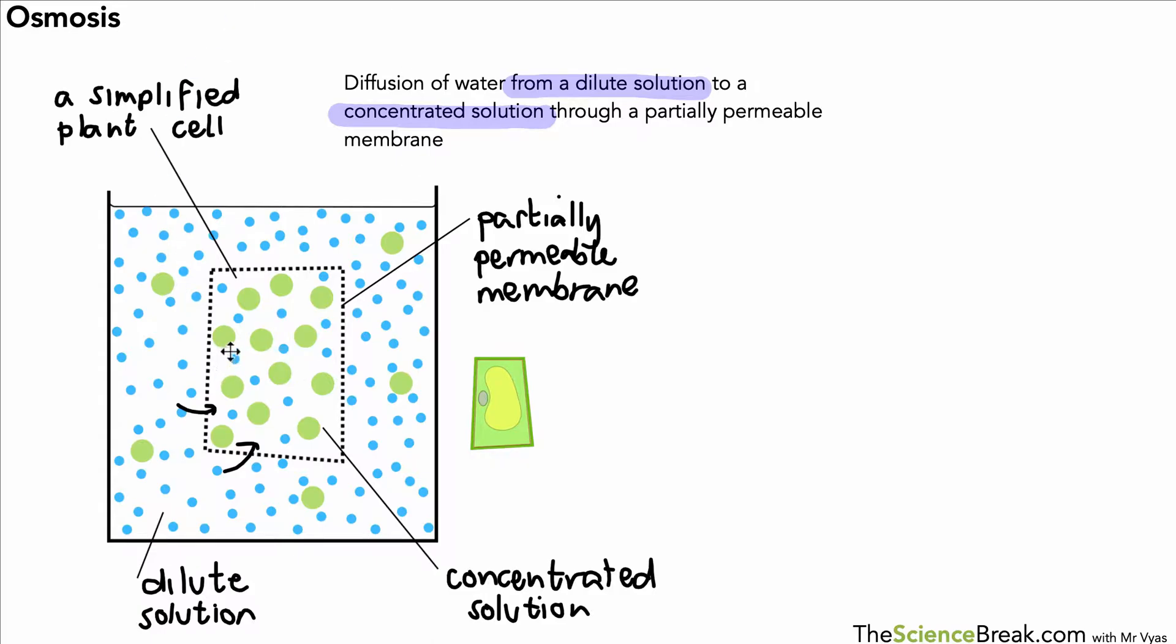So in this example here, what's going to happen is water is going to move into this cell. Solute molecules don't move because they're too large to get through the partially permeable membrane, but the smaller water molecules can get through the membrane, and this is why water moves in and the solute doesn't move out.